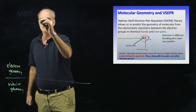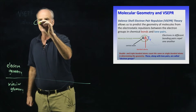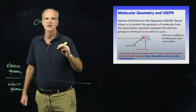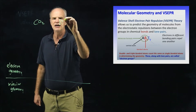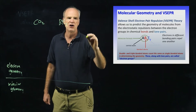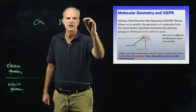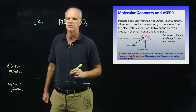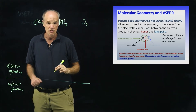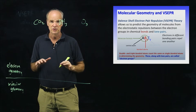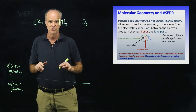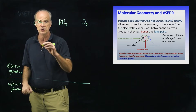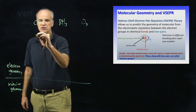So let's pick three simple molecules to look at. One molecule I want to look at is carbon dioxide, another is boron trihydride, and the final molecule is ozone. In order to use VSEPR theory to figure out the three-dimensional structure of a molecule, you must first draw a Lewis structure.